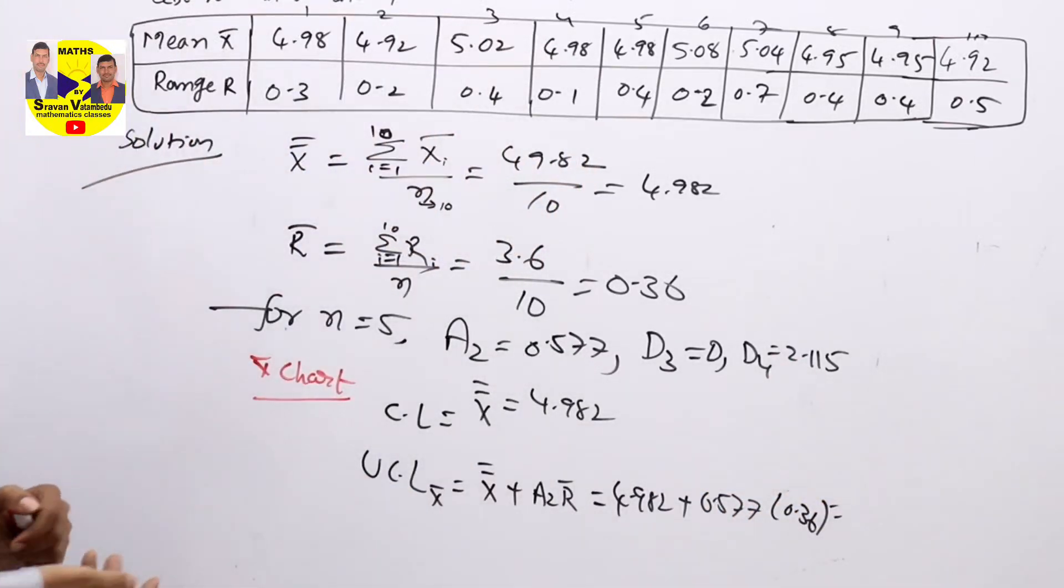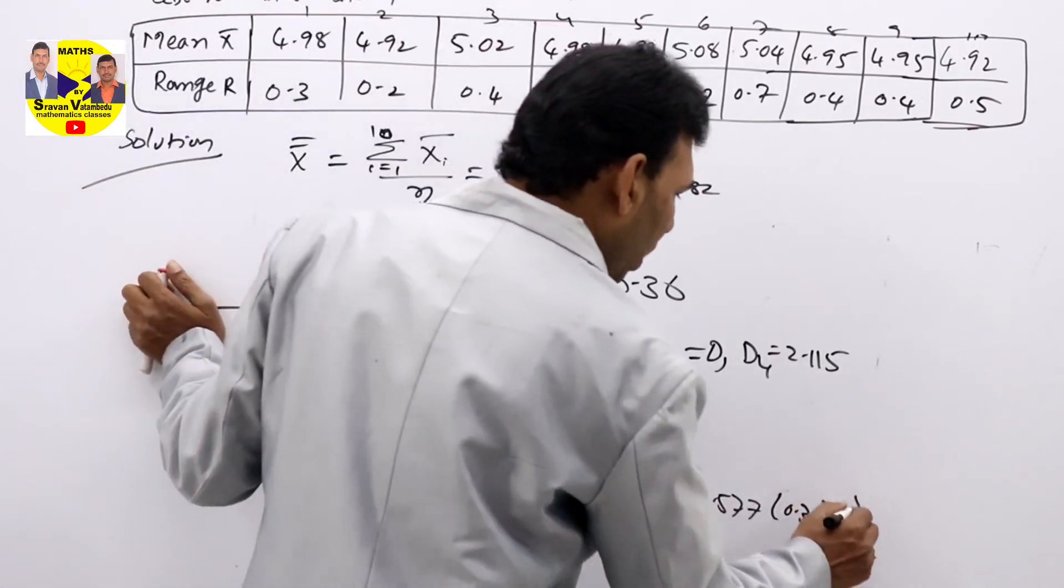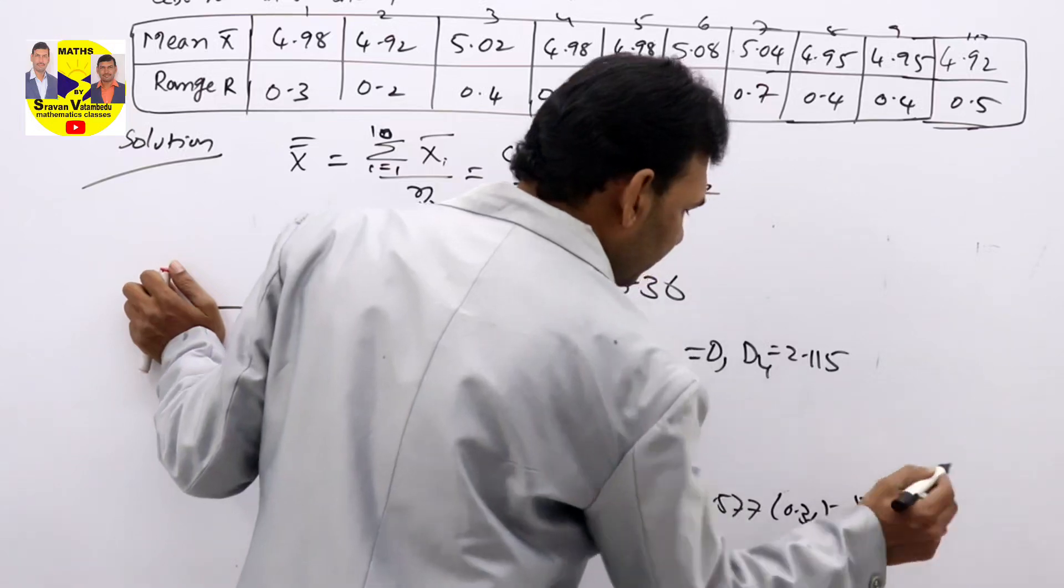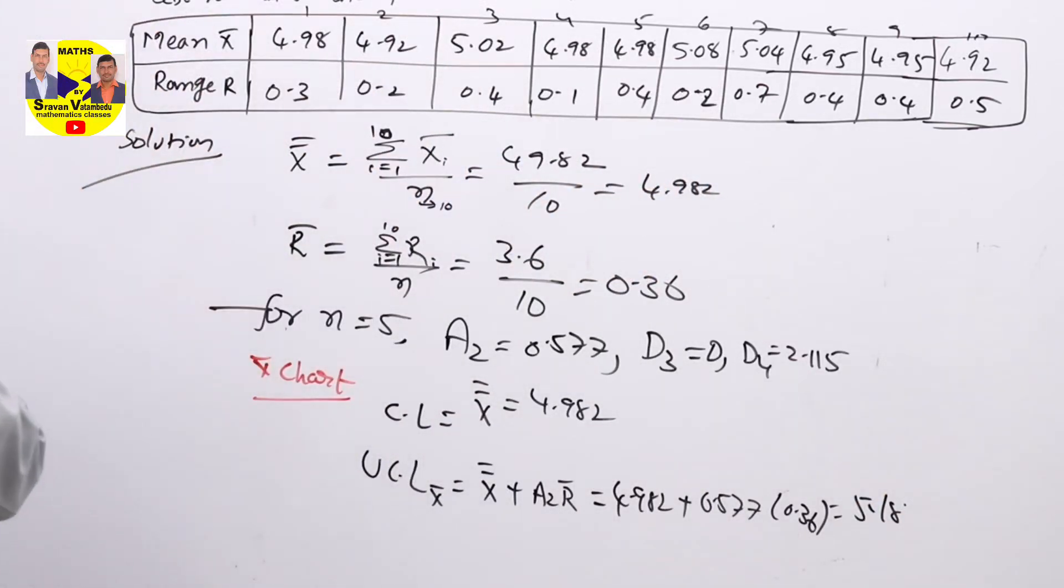Use your calculator to get that simplified value. You will get UCL X: 5.18, 5.1897.